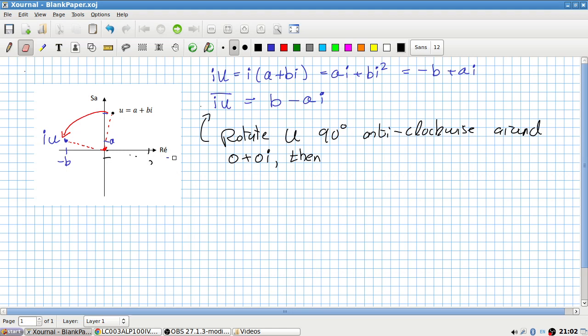Just caught myself. The conjugate only changed the sign on the... ah, sorry. So in fact, it should be here i u conjugate. The b is still negative, but now the a is negative. So okay, good thing I caught myself.